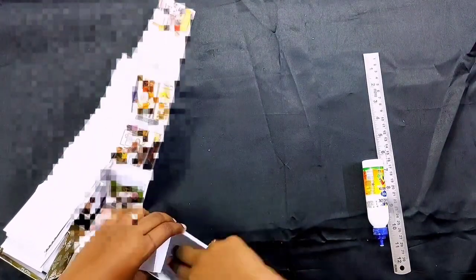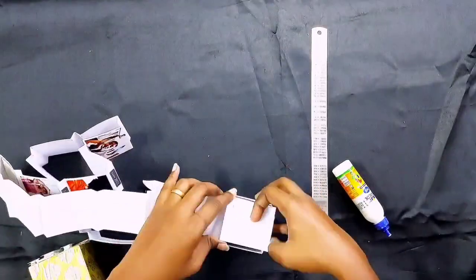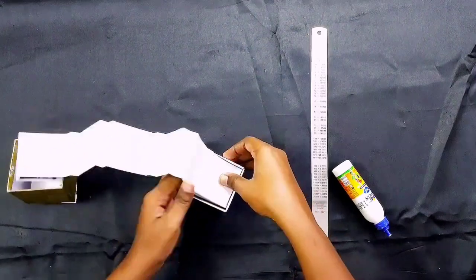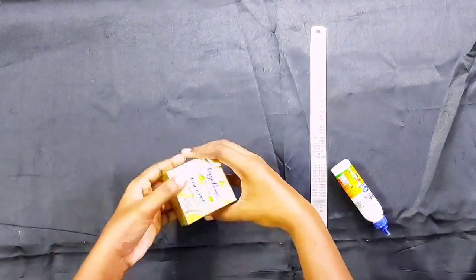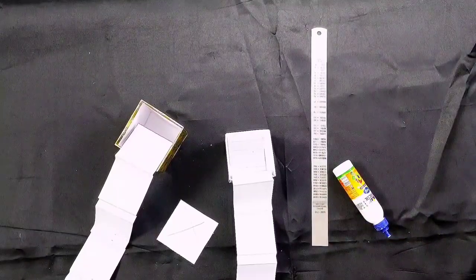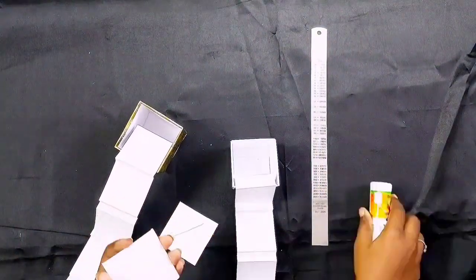You can press the box in the box and press it to the top. Finally, you can insert the box in the box. You can cut 2 square squares from 5.5cm to 5.5cm.